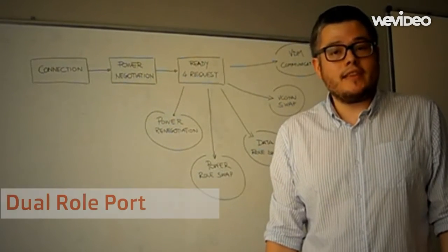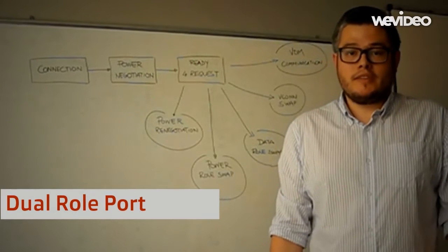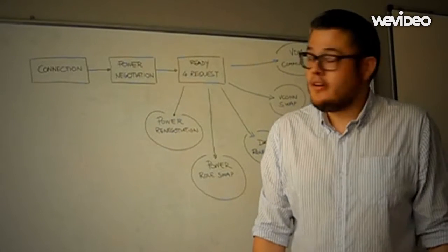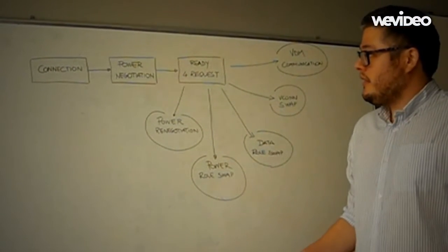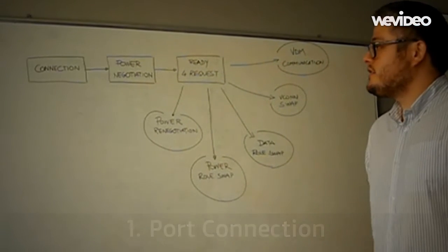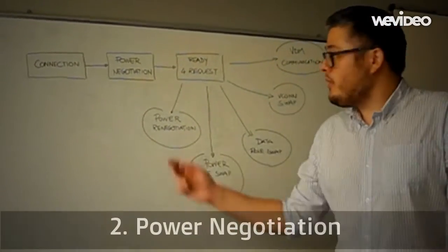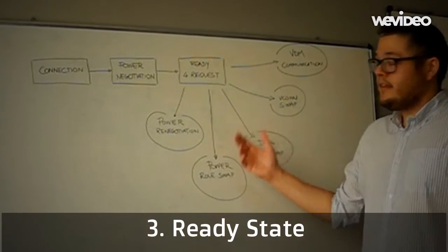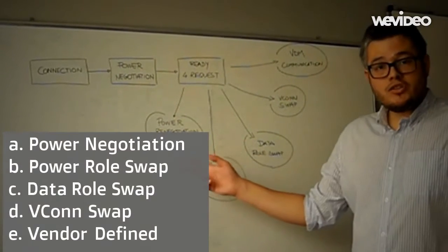Our solution is implementing a dual-role port, so basically it connects both as a source and as a sink. What we are going to show you now is that our solution will be involved in a typical connection between two devices. So there will be first of all the connection, then a power negotiation, and then the devices will be in a ready state, handling some requests. In particular, you can do a power renegotiation.